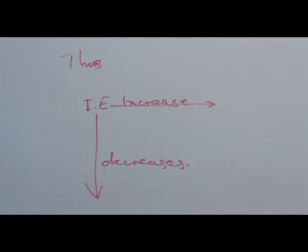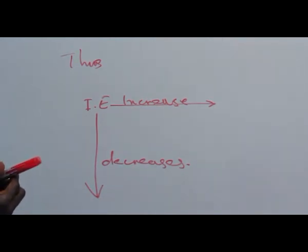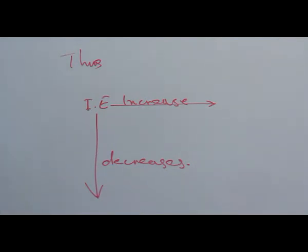Summarily, it can be seen on the board that IE is ionization energy. The ionization energy increases across the period from left to right, while it decreases down the group from top to bottom.